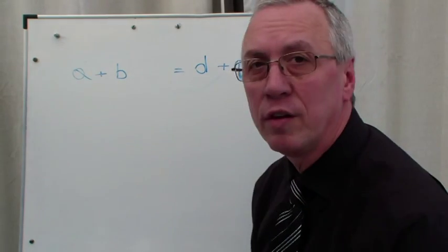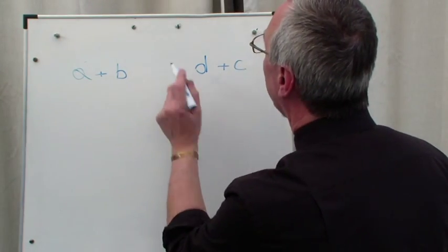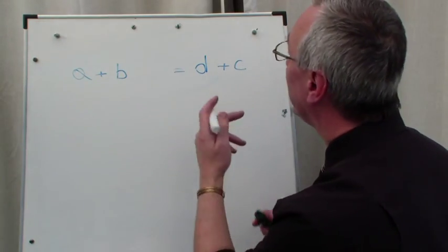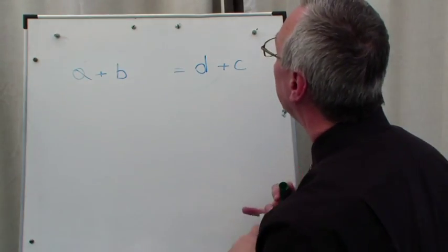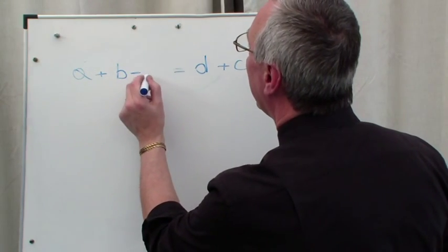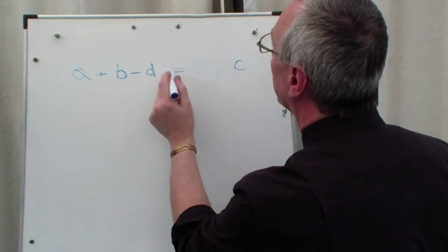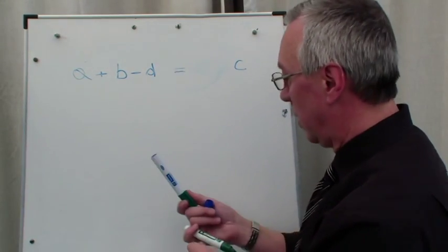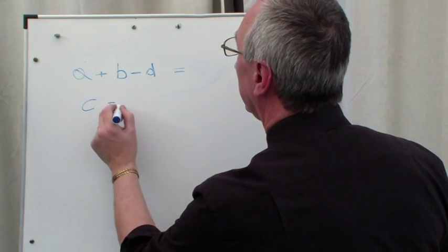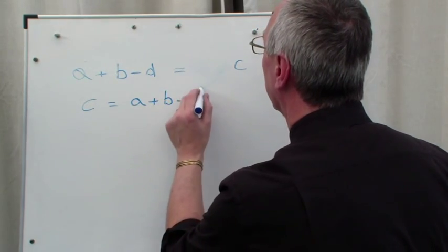So now we have A plus B equals D plus C. We want to get C on its own, so we can revert back to our other rule of doing the same to both sides. We want to minus D off both sides in order to get rid of that. Well, it's the same - we're crossing the D over the equals sign and making it a minus D. So we can just rub that off. It's travelled across, it's become a minus. Let's put the subject on the left-hand side. So C equals A plus B minus D.